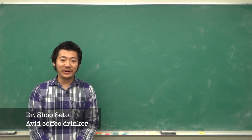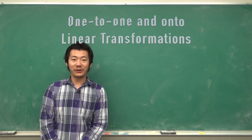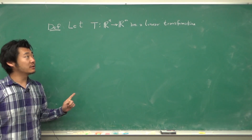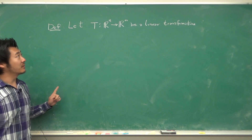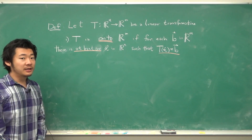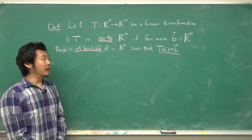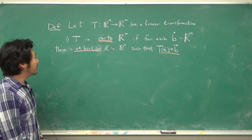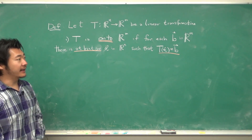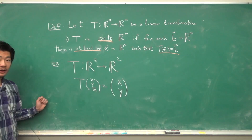In this video, we will talk about 1-to-1 and onto linear transformations. First, some definitions. Let T be a linear transformation from Rn to Rm. We say T is onto Rm if for each B in Rm, there is at least one X in Rn such that T of X is equal to B.